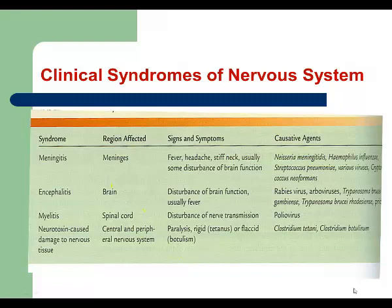In this lecture we are going to talk about four groups of infections that affect the human nervous system. The first syndrome is called meningitis, meaning the meninges become infected and inflammation occurs in that area. The main symptoms of meningitis are high fever, severe headache, and stiffness of the neck. Stiffness of the neck is a very specific symptom for bacterial meningitis. In general, meningitis can be caused by bacteria, viruses, or fungi.